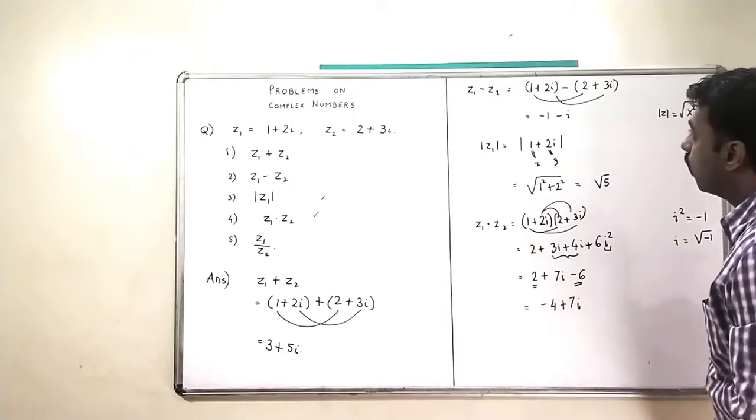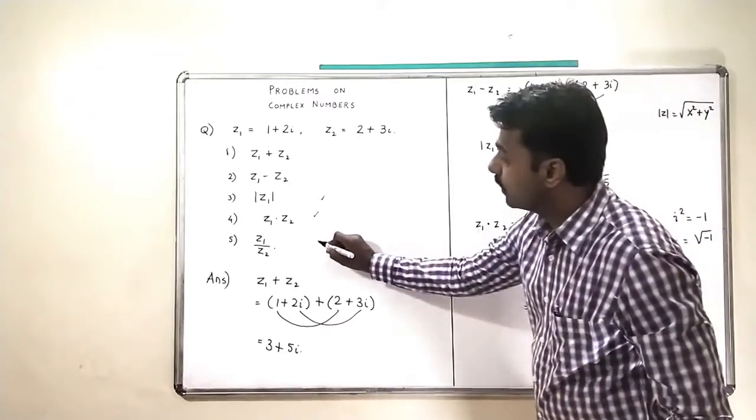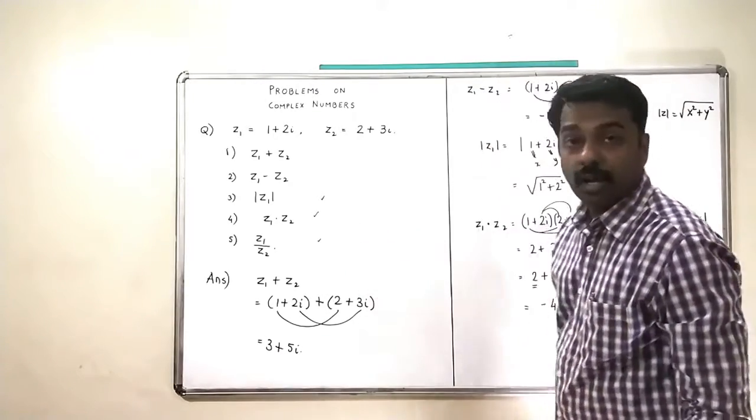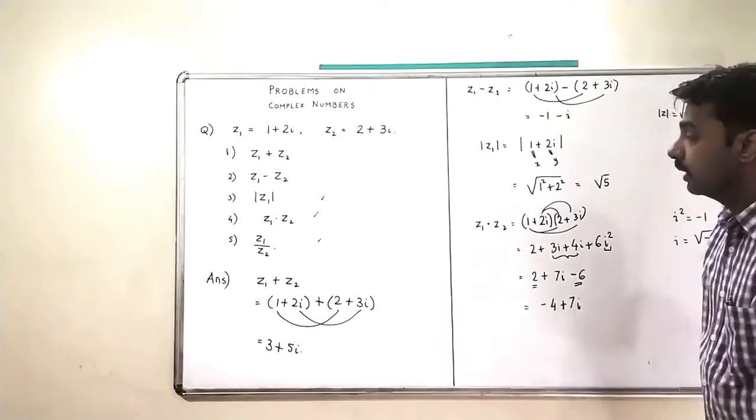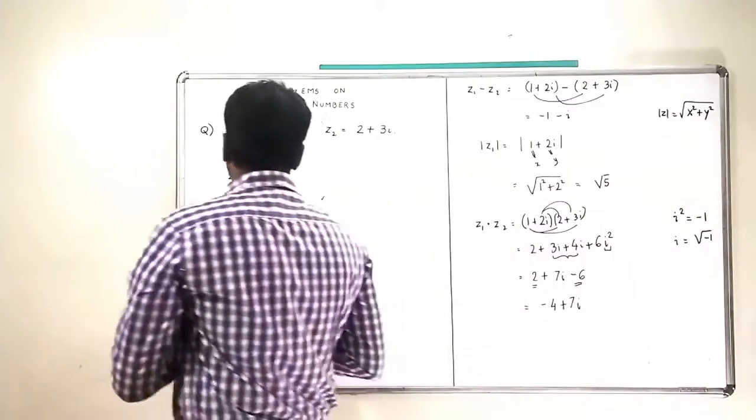And what is the last part, which is Z1 upon Z2? Let us find what is Z1 upon Z2.